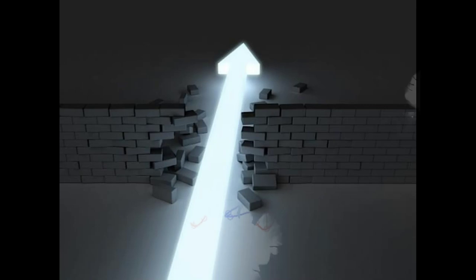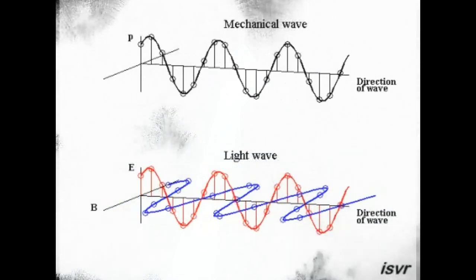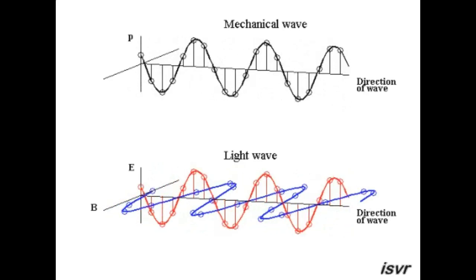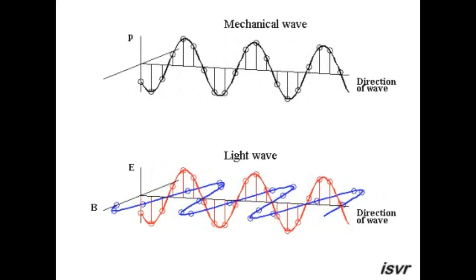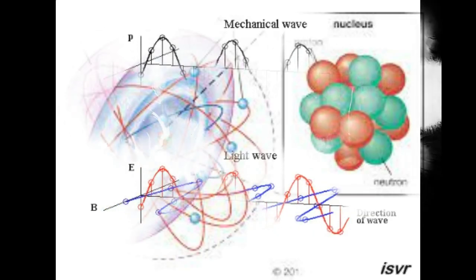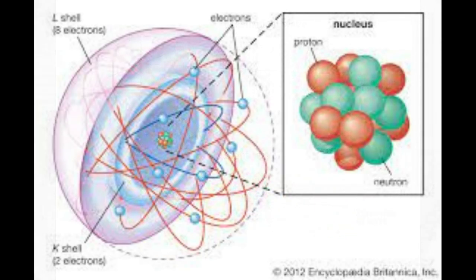To understand why light can't travel through walls, we need to first understand what walls are made of. Most walls are made of solid materials like concrete, brick, or wood. These materials are made up of atoms that are tightly packed together, creating a dense and opaque structure.